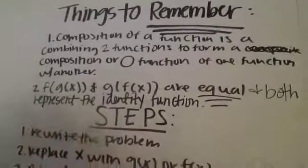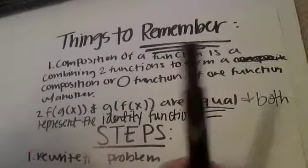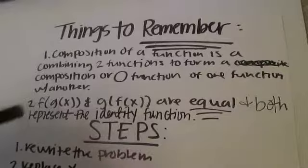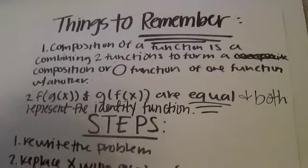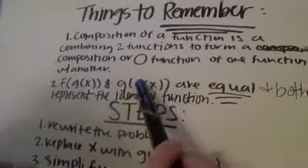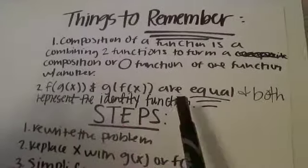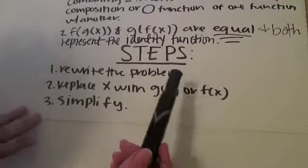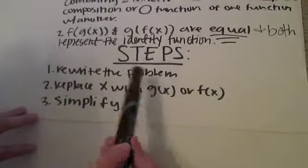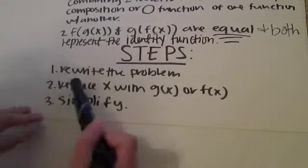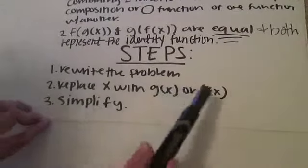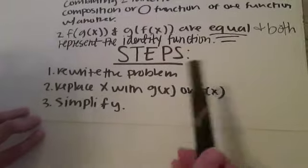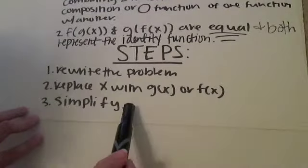Here are some things to remember: a composition of a function is basically combining two functions to form a whole function of one function with another. Also, f of g of x and g of f of x can both represent identity functions. The easy steps to remember: first, rewrite the problem; second, replace x with g of x if finding f of g of x, or with f of x if finding g of f of x; then simplify.